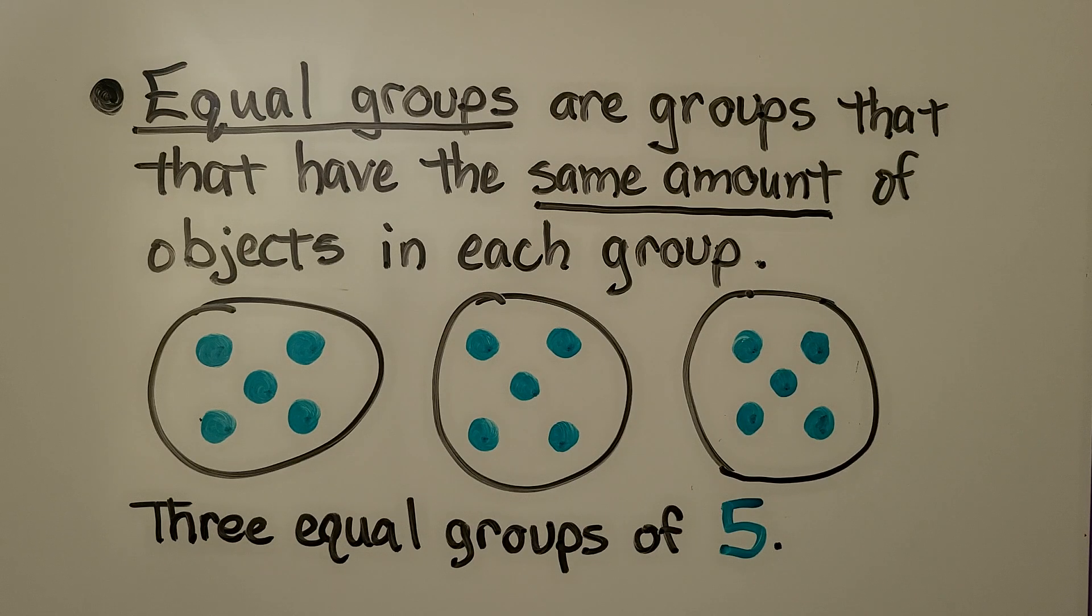Equal groups are groups that have the same amount of objects in each group. We have five objects in each group. We have three equal groups of five. We can skip count by five and say 5, 10, 15.